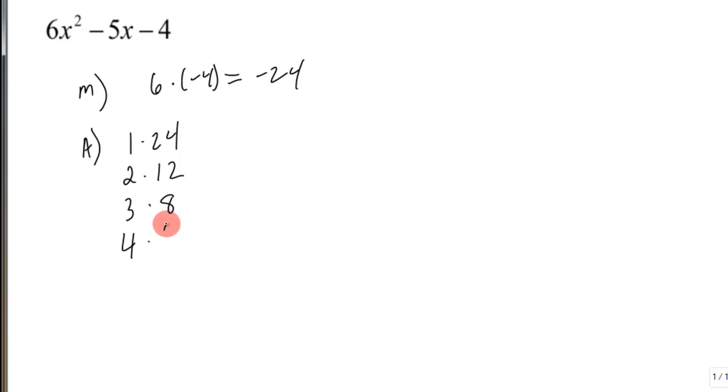1 and 24, 2 and 12, 3 and 8, and then I go to 5, it doesn't work, and when I get to 6, I start back along this route, so these are the factors and how they're multiplied together.